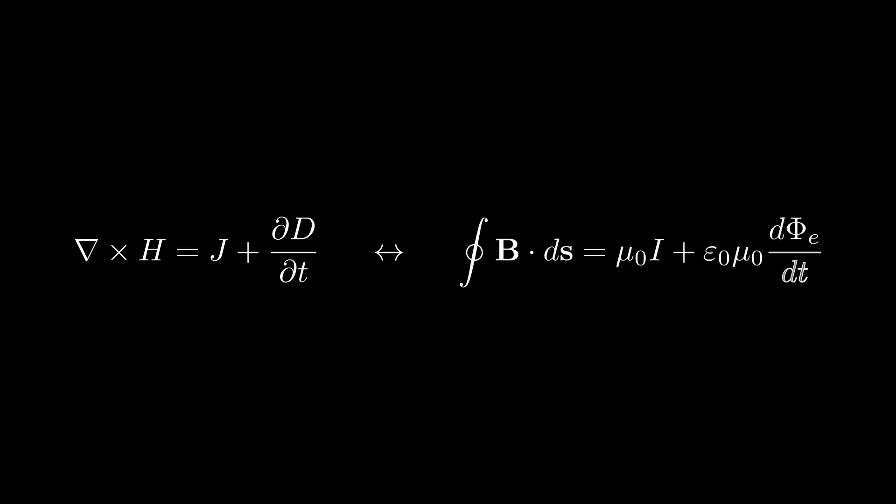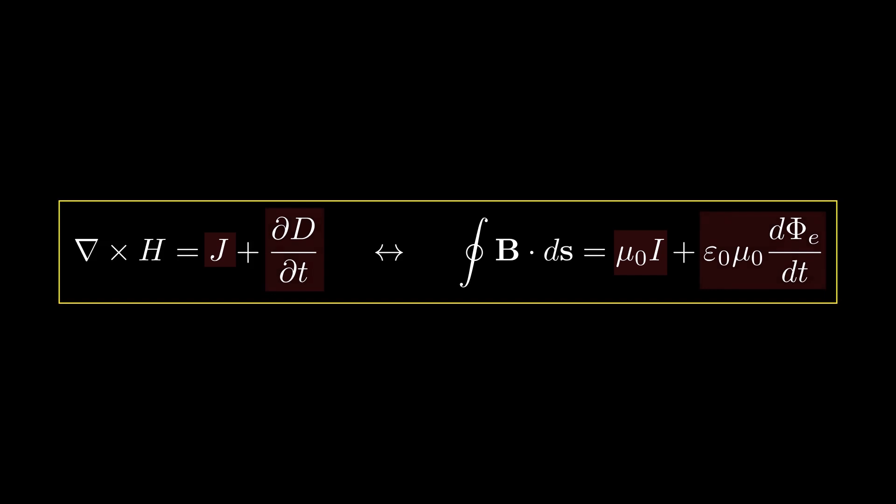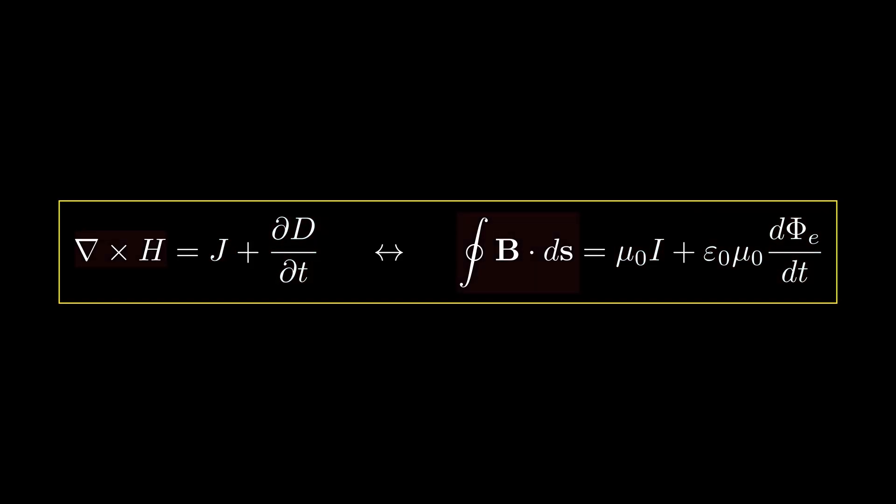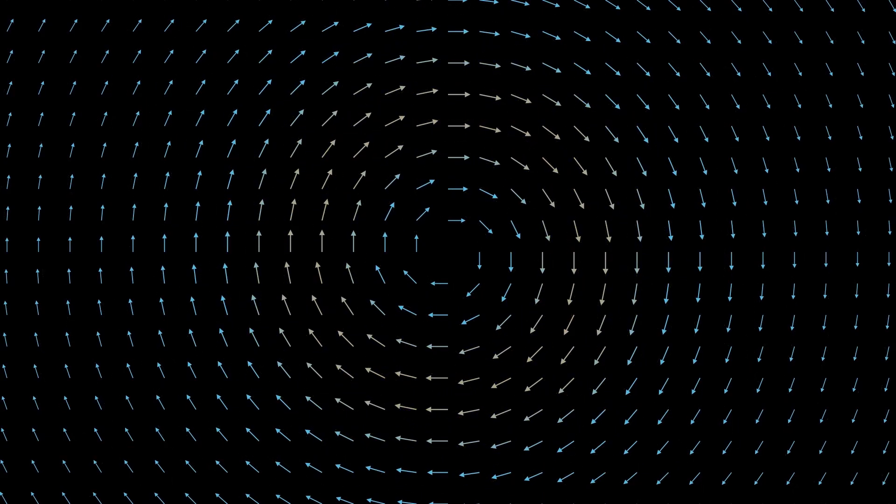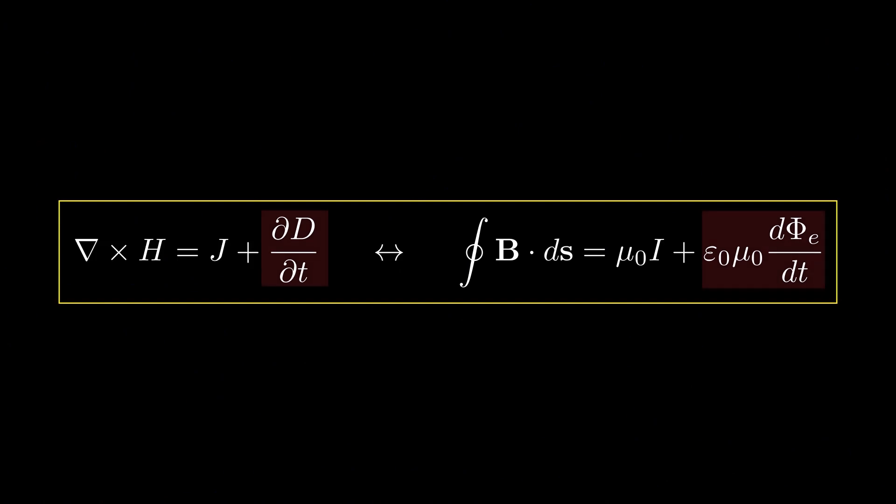The fourth and final equation is Ampere's law with Maxwell's modification. Both electric current and time-varying electric field through a surface produce the same effect: a circulating magnetic field around any path bounding that surface. The term that involves the derivative of electric field is called displacement current, a term that Maxwell pulled out of thin air to produce the wave equation.